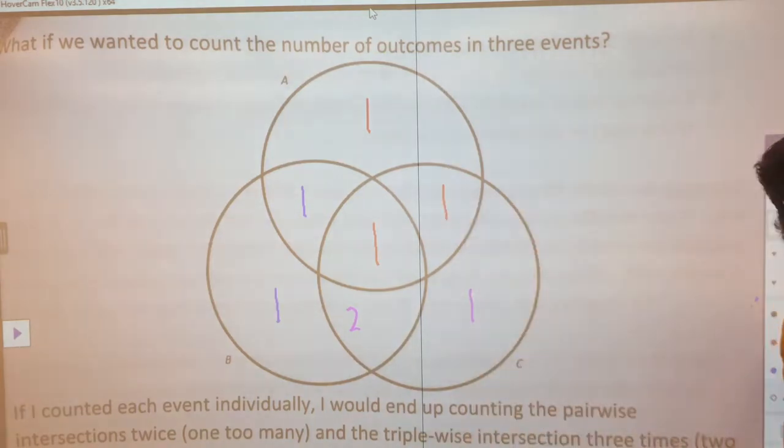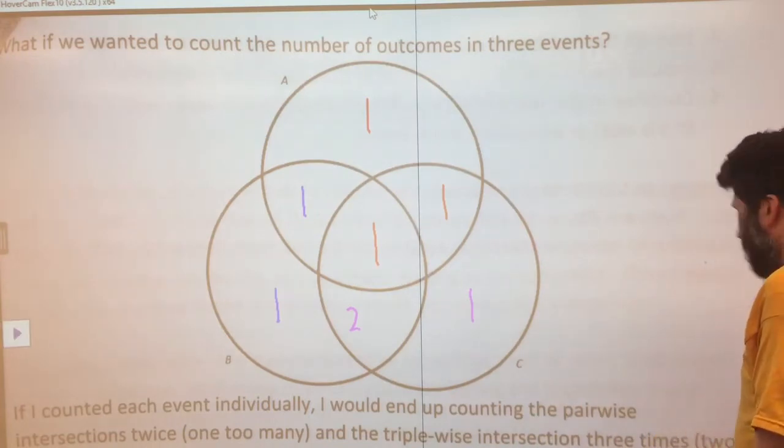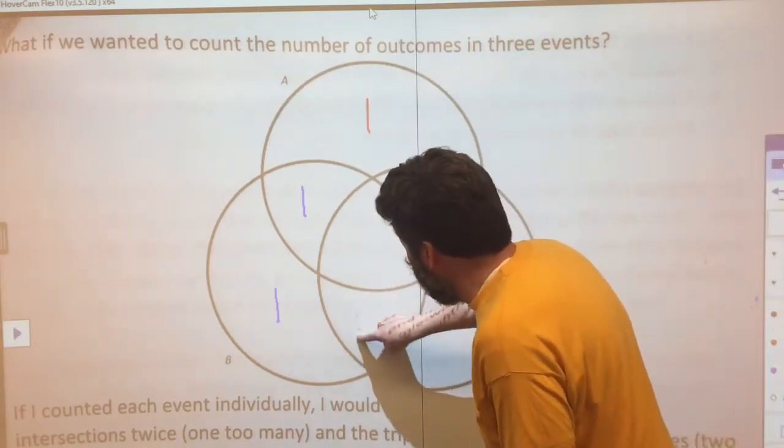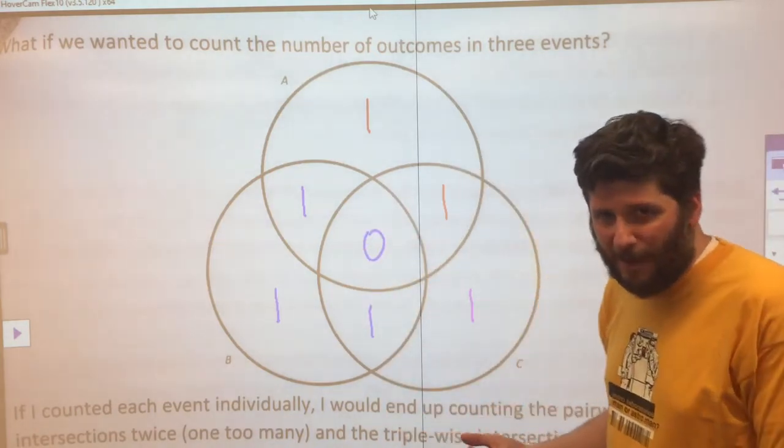This is still a two. So I'm going to subtract away everything that is in both B and C. I haven't done that yet. So if I do that, it does get that one to a one, but it now takes this one to a zero.